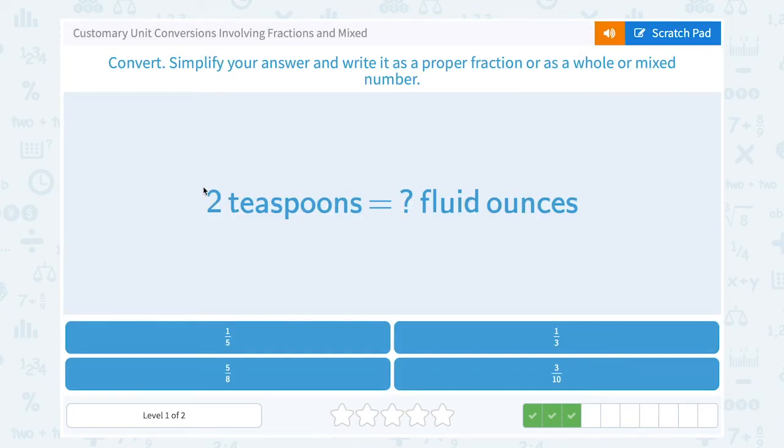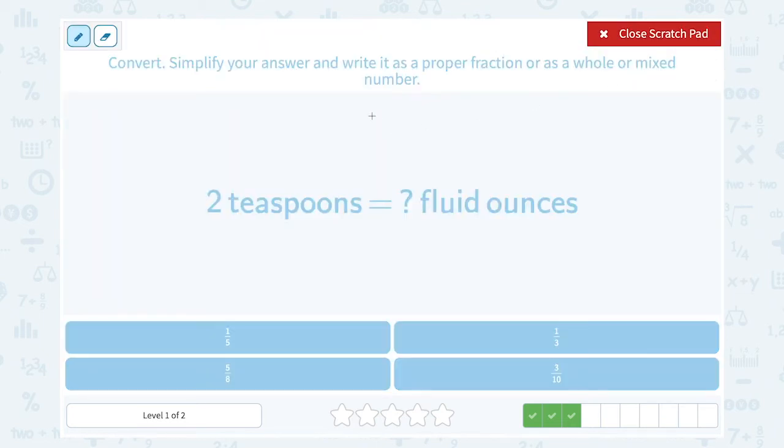This time we have two teaspoons and we want to know how many fluid ounces is that. We need to know our conversion. Six teaspoons are equal to one fluid ounce.